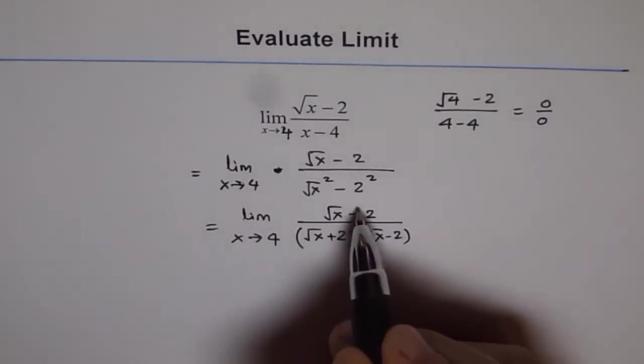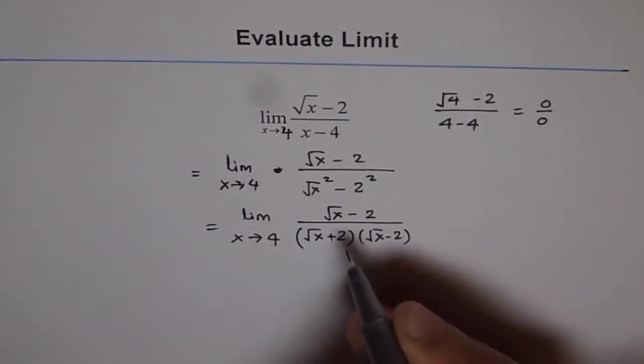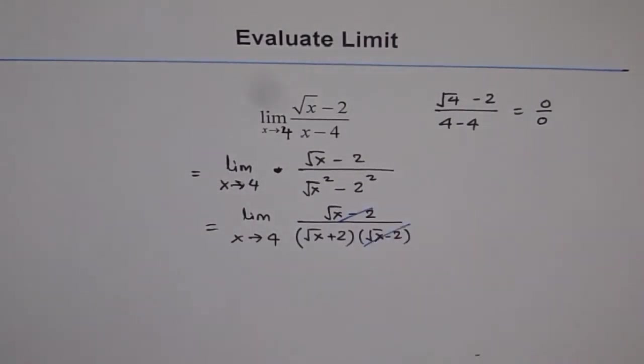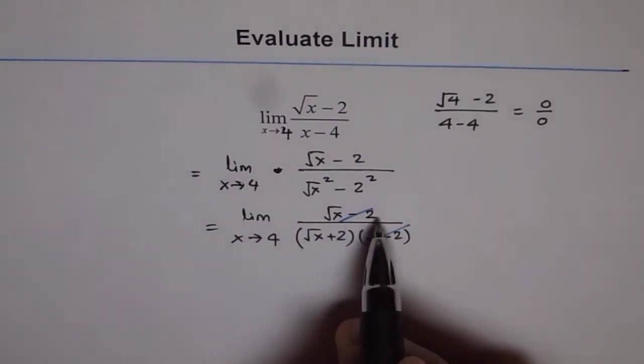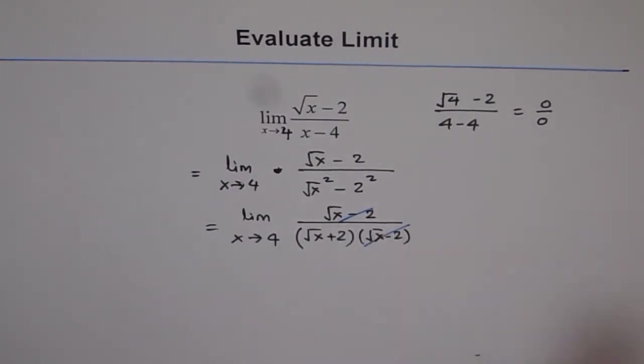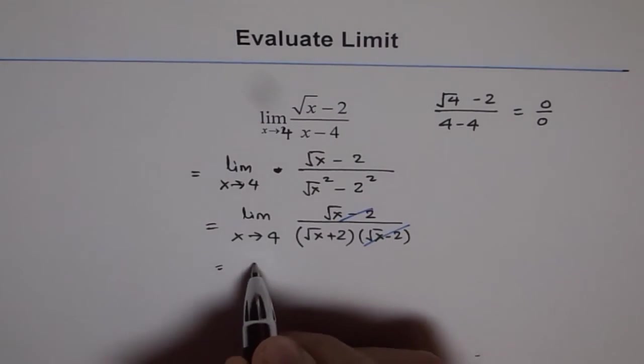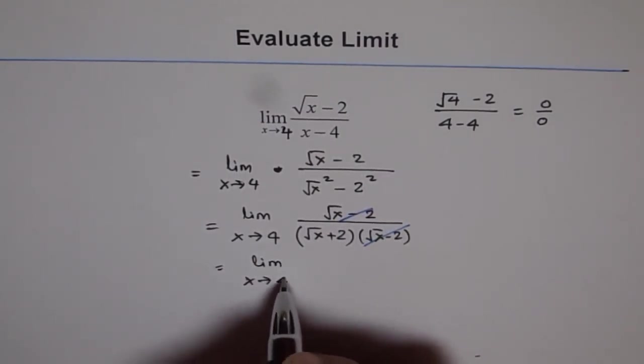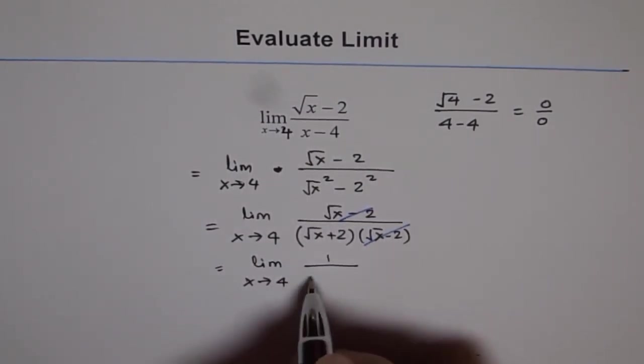Now these two factors will cancel out. That means square root x minus 2 divided by square root x minus 2 is 1. And therefore, we get this as limit x approaches 4 for 1 over square root x plus 2.